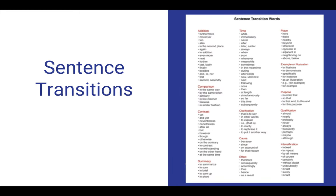Last but not least, we're going to talk about sentence transitions. On the right side are sentence transition words. The word in red is for when you want to add something to your writing — furthermore, also, in the second place, and again. We also have comparison transitions, contrast transitions, summary, time, place, purpose, and many others. Students should have this transitions document in their writing file, just as they should have the citing evidence document. When it comes to an examination, they'll be able to pull these from long-term memory and use them right away.